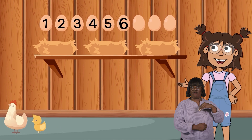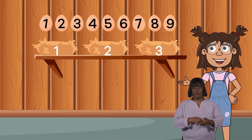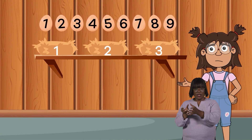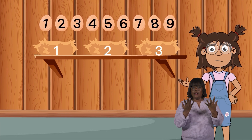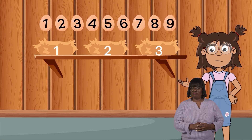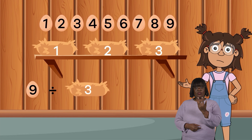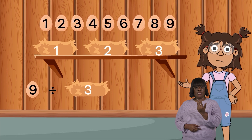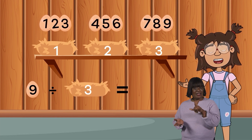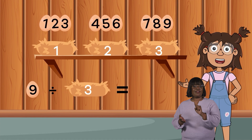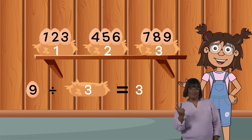Here's another. There are nine eggs and three nests. Can each nest hold an equal number of eggs? If we have nine eggs divided by three, the answer is yes! Nine divided by three equals three.